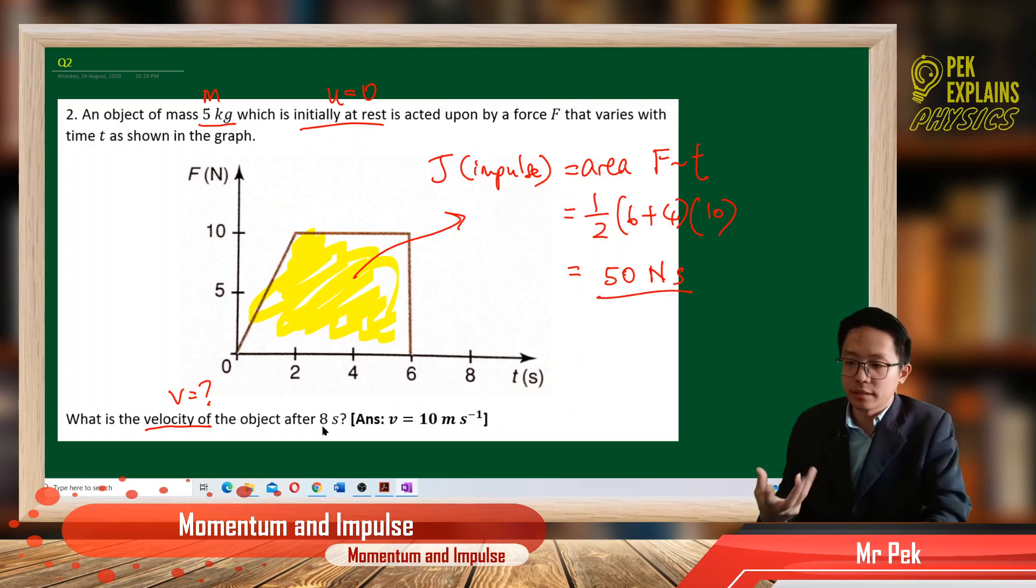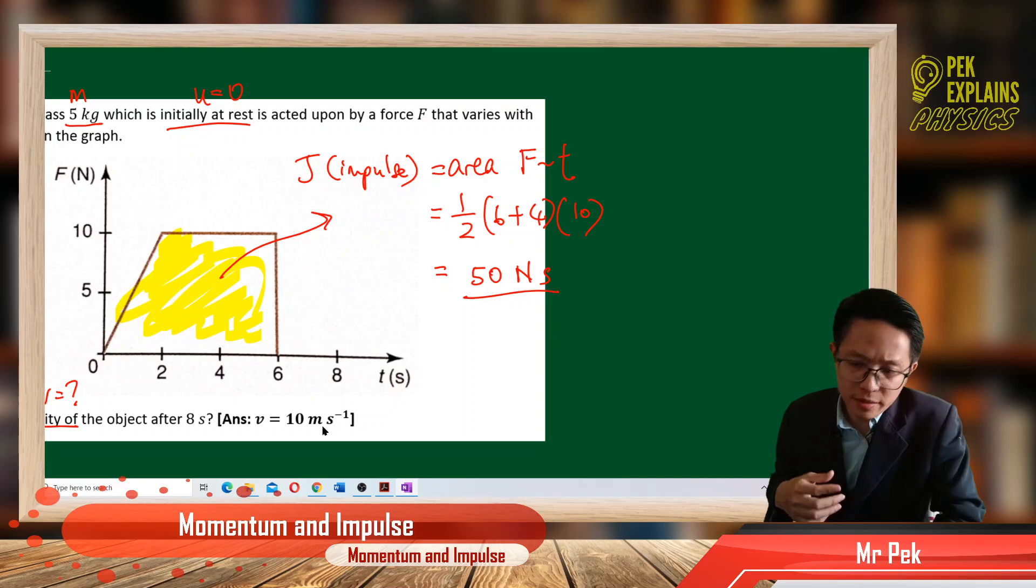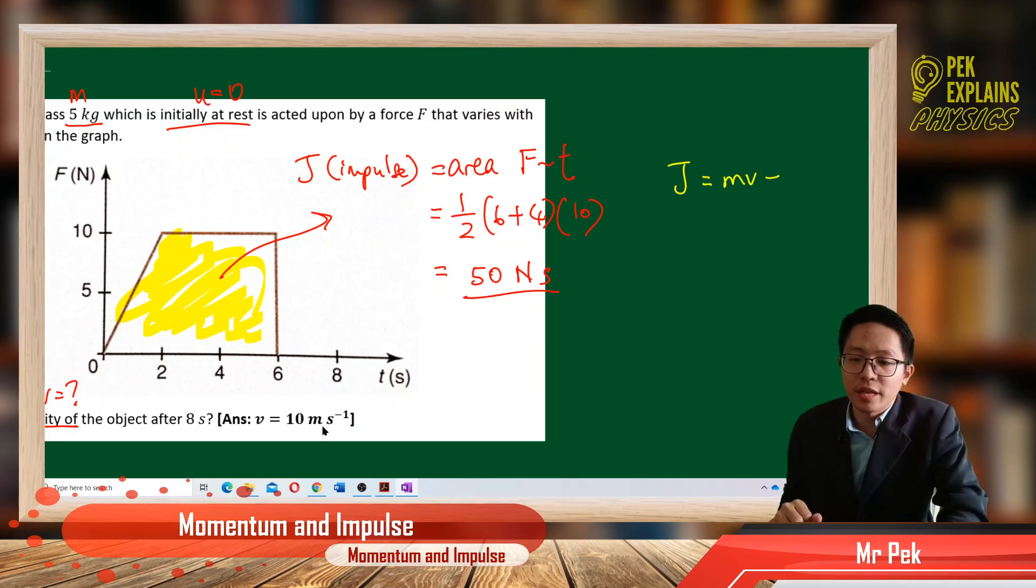So Newton second is the unit for impulse. Now we have the impulse. So what is meant by impulse? I still remember the definition of impulse. Impulse is actually the change of momentum, change of momentum which is mv minus mu. So we can find the final velocity. So impulse is 50, we got just now.